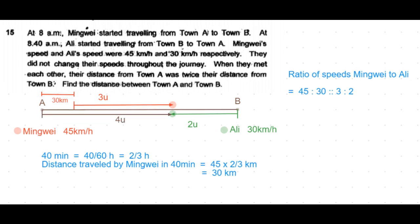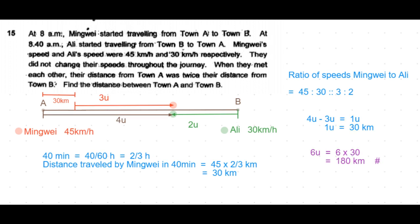But we already know that Mingwei traveled 3 units from 8:40, so the difference between the 4 units and 3 units is 1 unit, which is the distance she traveled prior to 8:40. So that is 30 kilometers. So we straight away get the distance 1 unit as 30 kilometers. So 6 units is the total distance between A and B. Four units plus 2 units is 6 units, so 6 times 30 equals 180 kilometers is the distance between Town A and Town B.